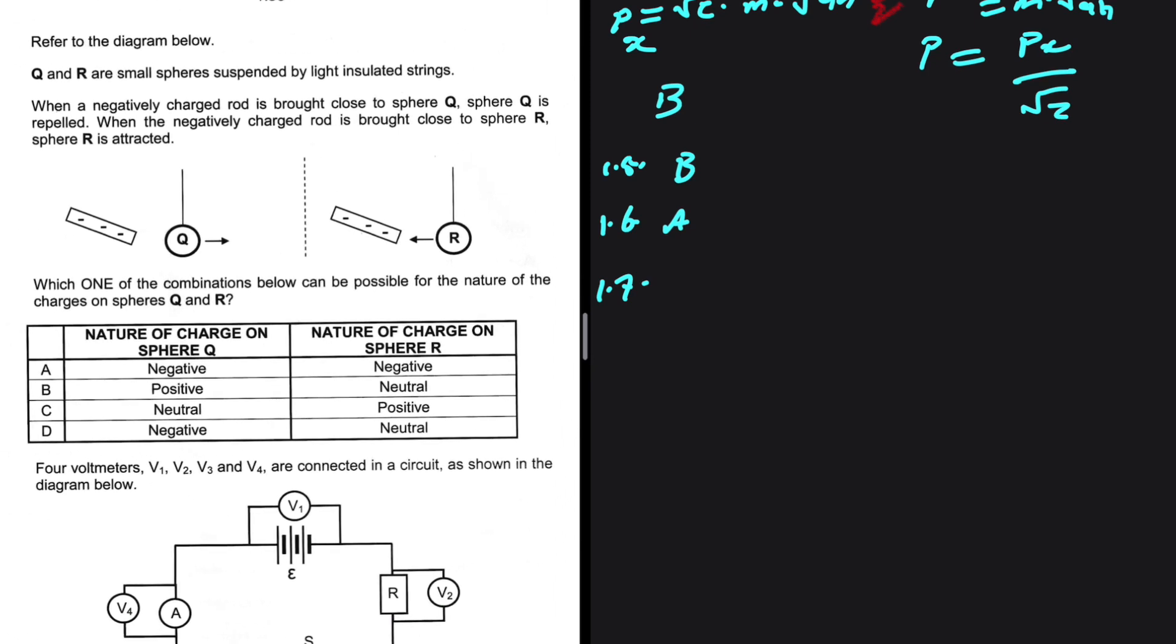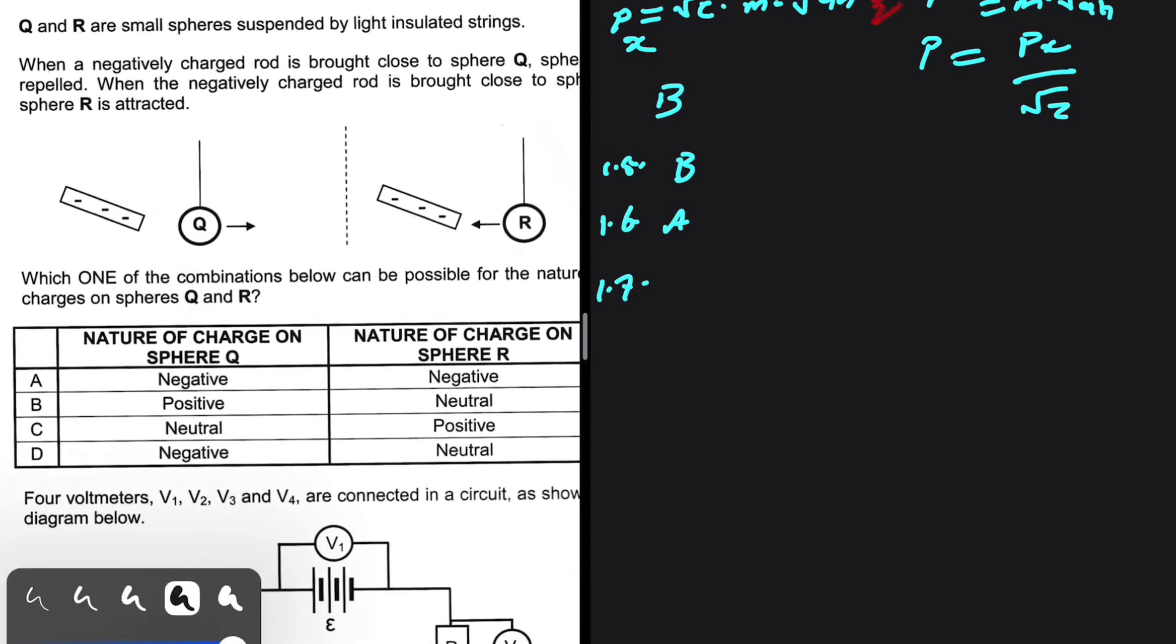1.7: Q and R are small spheres suspended by light insulated strings. When a negatively charged rod is brought close to sphere Q, sphere Q is repelled. When the negatively charged rod is brought close to sphere R, sphere R is attracted. Which one of the following combinations below can be possible for the nature of the charges on sphere Q and R? If you look at option A, we have negative and negative. So Q and R cannot be negative and then act differently when they are brought close to the rod. They should act in the same way, so this is not correct. A cannot be correct. They cannot be all negative and act differently around the same charge.